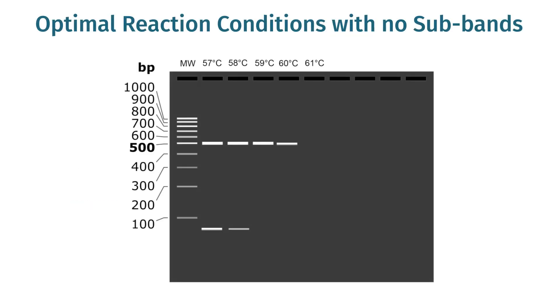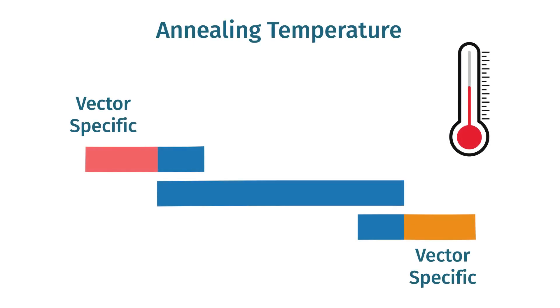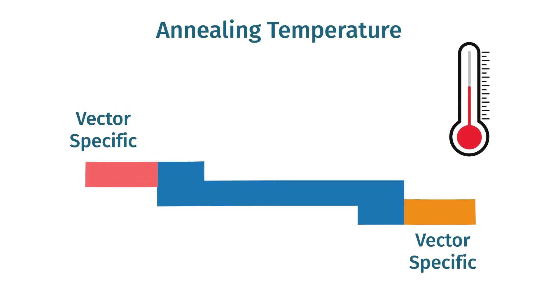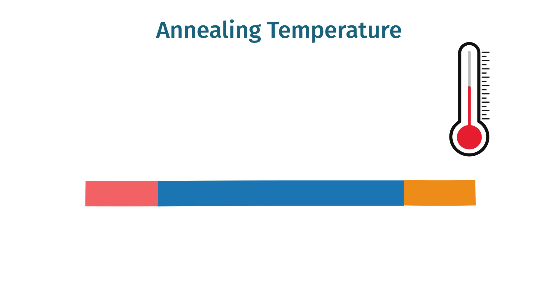In addition, optimize reaction conditions so that there are minimal sub-bands or PCR artifacts present in your PCR reaction. It is best to base your annealing temperature on the target specific portion of your primer.